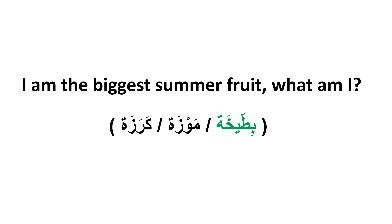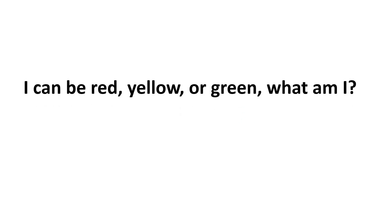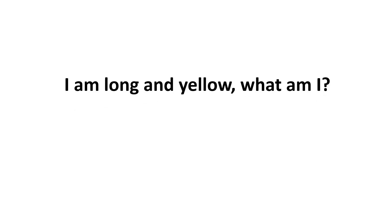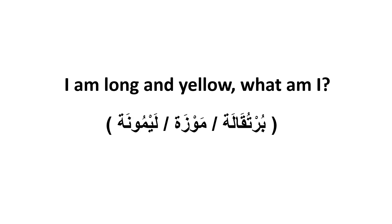Good job! Riddle three: I can be red, yellow or green — what am I? موزة، برتقالة، أم تفاحة? The answer is تفاحة — apple. Excellent! Riddle four: I'm long and yellow — what am I? برتقالة، موزة، أم ليمونة? The answer is موزة — banana. Wonderful!